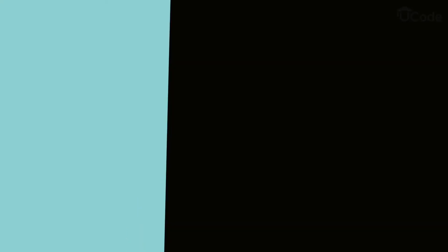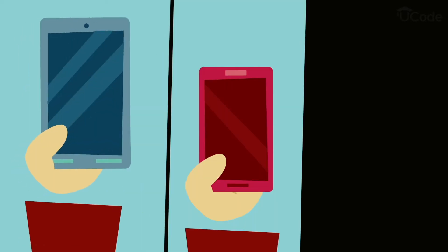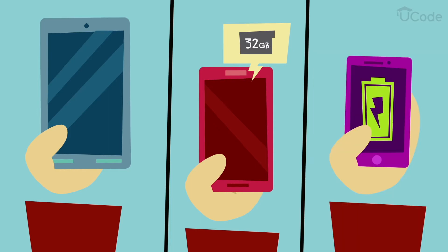For example, when comparing smartphones, one phone might have a bigger screen, but another model might have more storage space. And yet, another model might have longer battery life.